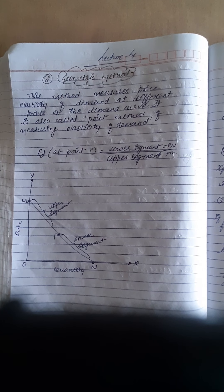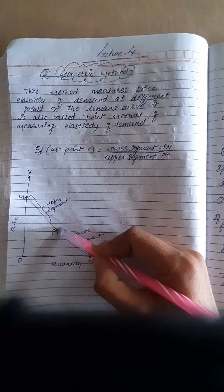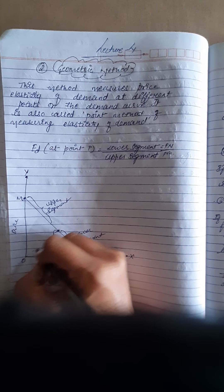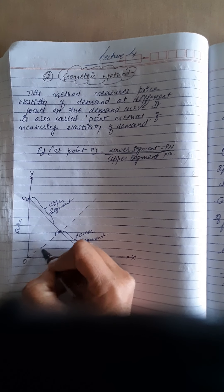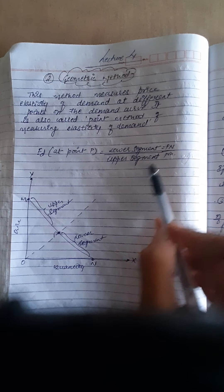The geometric method measures price elasticity of demand at different points on the demand curve. It is also called the point method. The formula is: elasticity of demand = lower segment divided by upper segment. On the figure, the Y-axis is price and the X-axis is quantity. The demand curve line is divided into two parts — the lower segment and the upper segment — and substituting these values gives you the elasticity of demand (Ed).